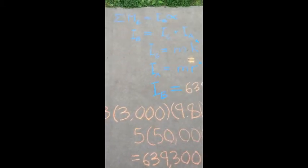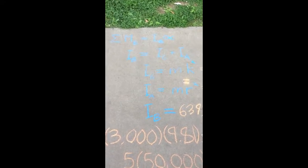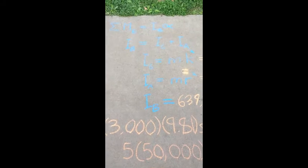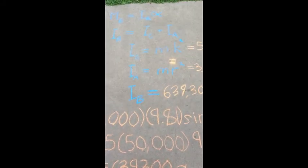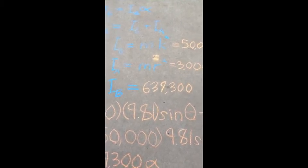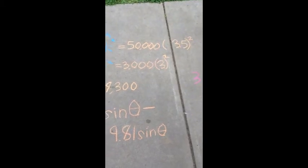Our first step is to set up our sum of moments about B, which equals our mass moment of inertia times alpha. First, we find IB equals IG plus IA. IG is found using our radius of gyration, so mass times radius of gyration squared. That's 50,000 kilograms times 3.5 meters squared.